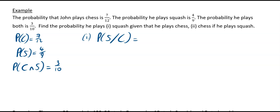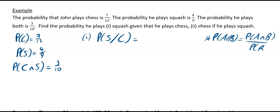So remember the formula: probability of A given B is equal to the probability of A intersect B divided by the probability of B. A helpful memory trick — in the notation A|B, it looks like B is dividing, and indeed probability of B goes on the bottom line.